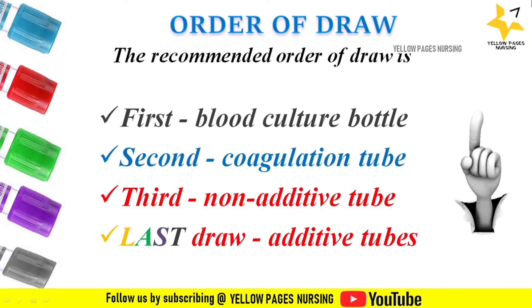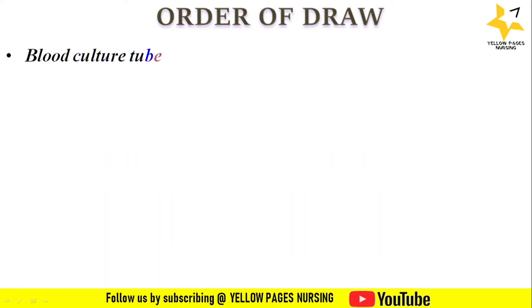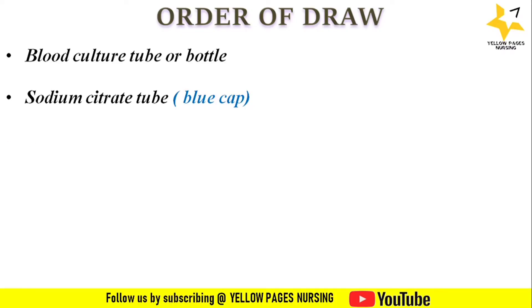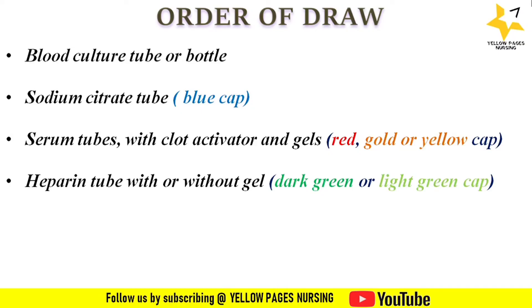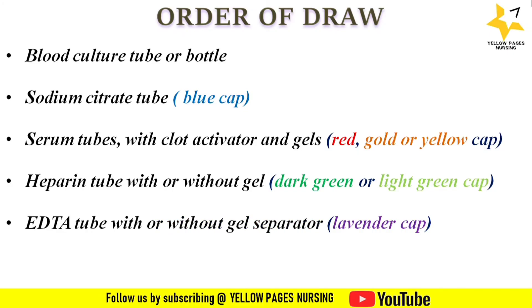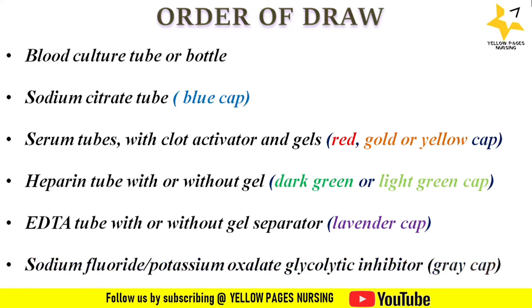Here are all the tubes for reference: blood culture tube or bottle; sodium citrate tube with a blue cap; serum tubes with clot activator or gel, which have a red, gold, or yellow cap; heparin tube with or without gel, which has a dark green or light green cap; EDTA tube with or without gel separator, which has a lavender cap; and sodium fluoride or potassium oxalate glycolytic inhibitor tube, which has a gray cap. This is all about order of draw, which is also followed according to institutional policies.